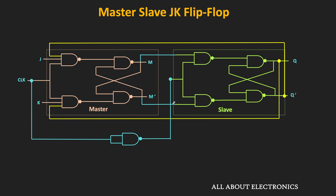To use this latch as the JK Flip Flop, the Q-bar output of the second latch is connected to the NAND gate where the J input is applied, and the Q output is connected to the NAND gate where the K input is applied. The clock signal is directly applied to the master latch, while for the slave latch, the same clock signal is applied through a NAND gate — that means the slave latch receives the inverted clock signal. This NAND gate is used as an inverter to generate the inverted clock signal.